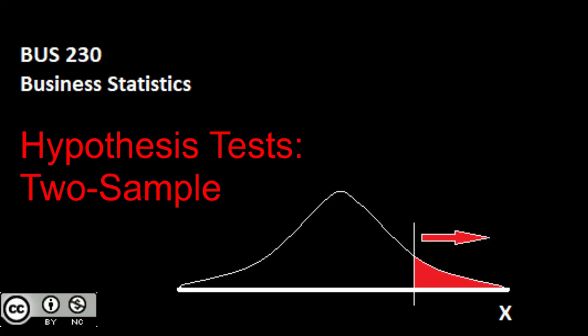So we're going to switch gears a little bit here. So far for this whole course we have more or less focused on having one sample from the same population. In this case, what we're going to take a look at is what happens if we have two samples, and we want to conduct a test to figure out: are these two samples likely from the same population, or do we have evidence to suggest they're from different populations?